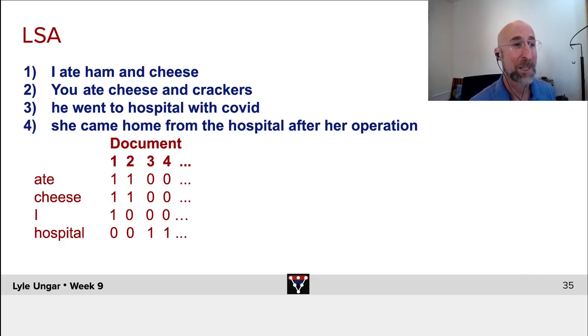Each column is a document for every document in my collection. My corpus, to use the fancy piece. You can see the word ate shows up in documents number one and two,